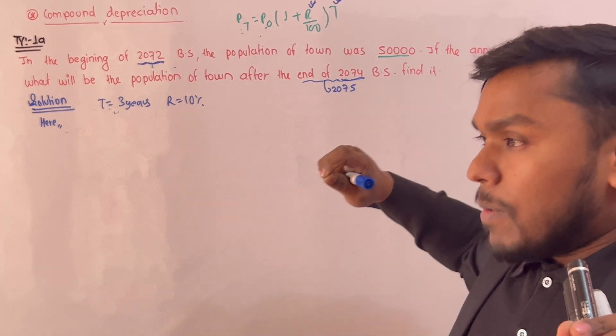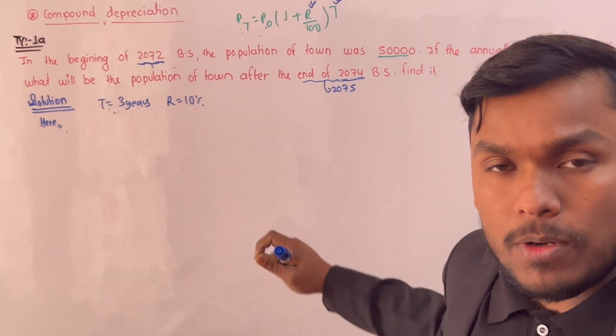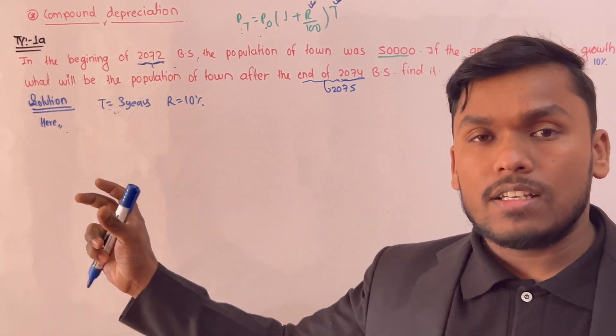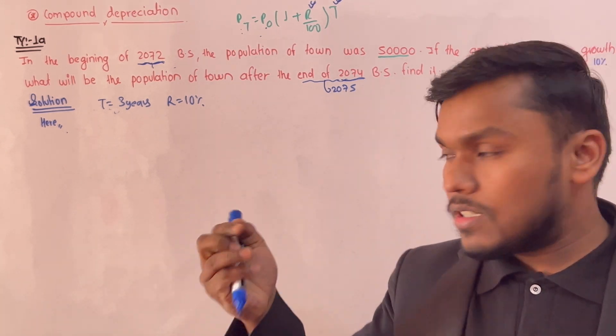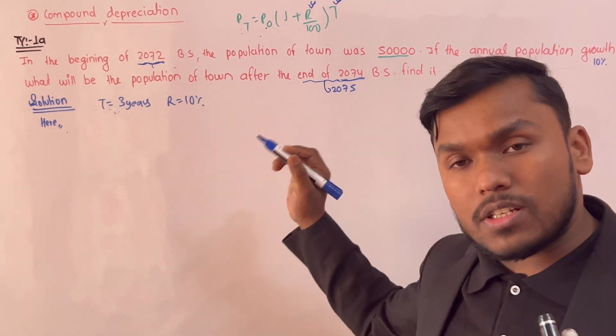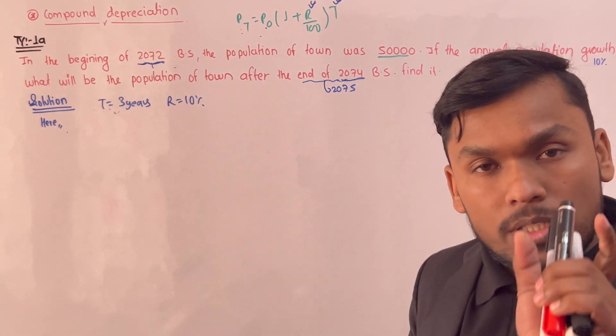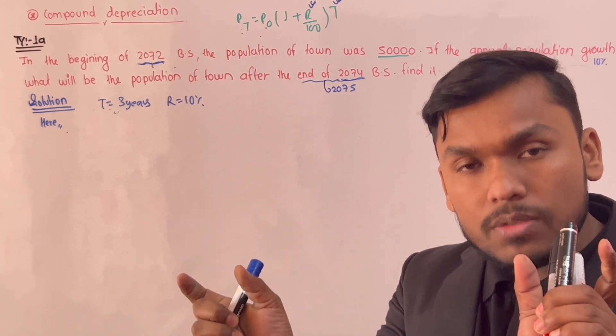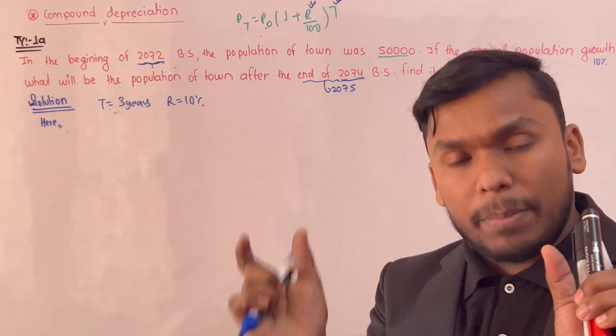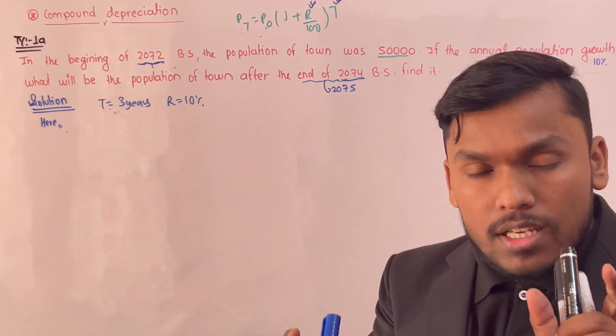What does population growth mean? For example, 20,000 or 30,000 — 20,000 is P0 and 30,000 is Pt.